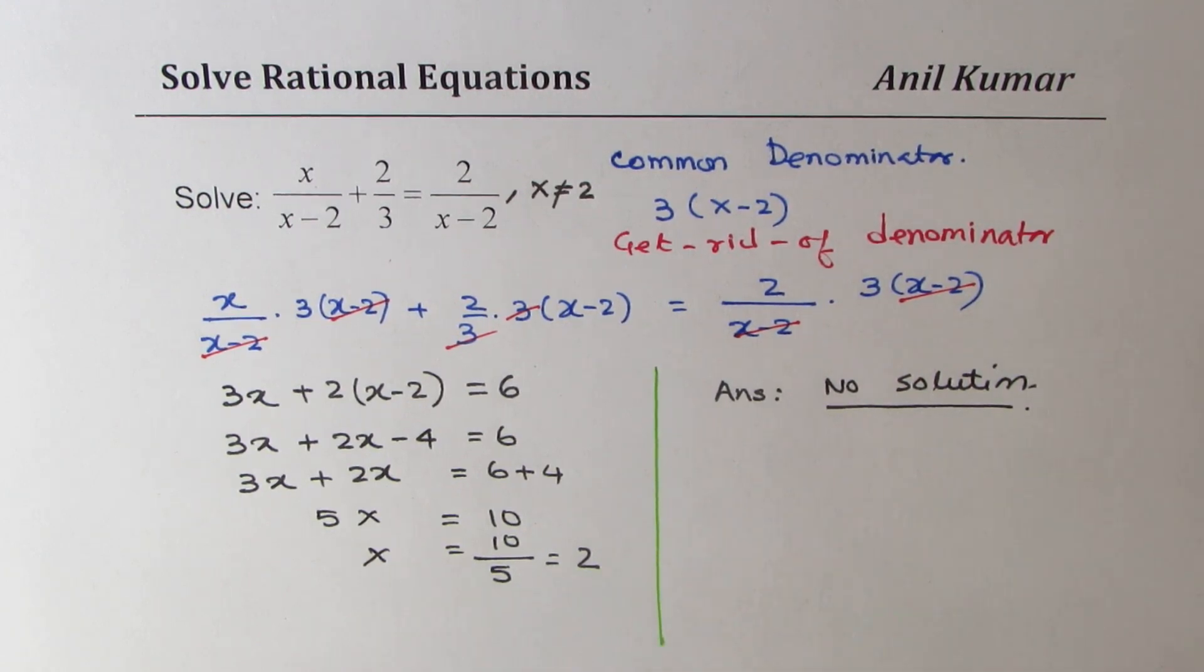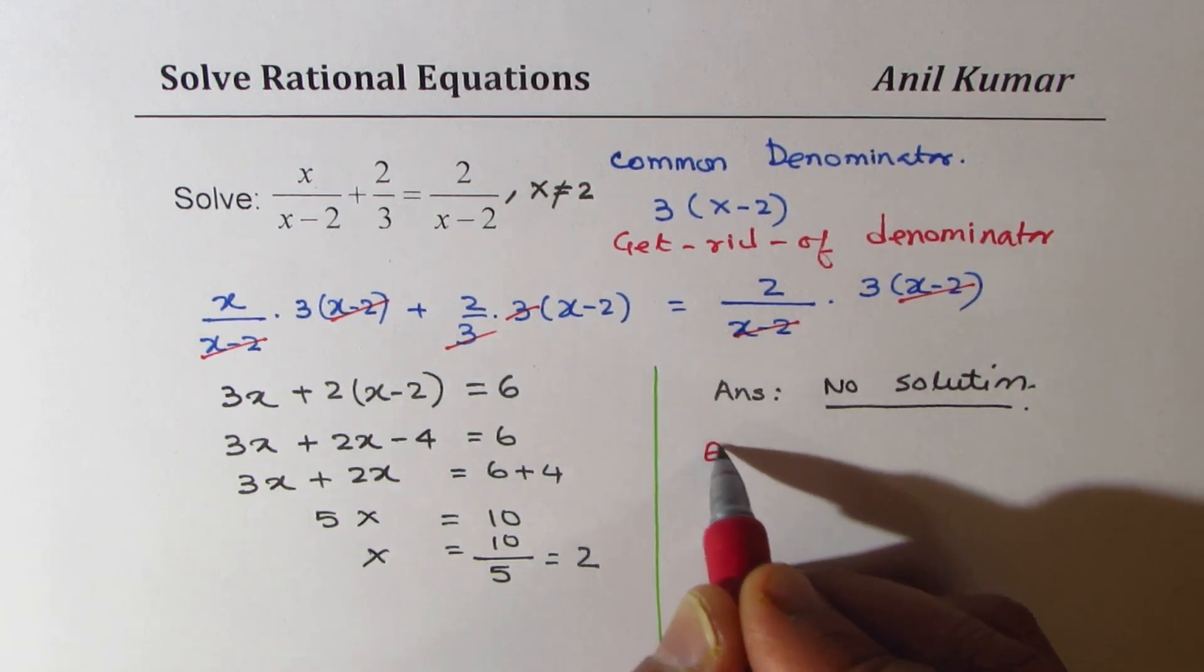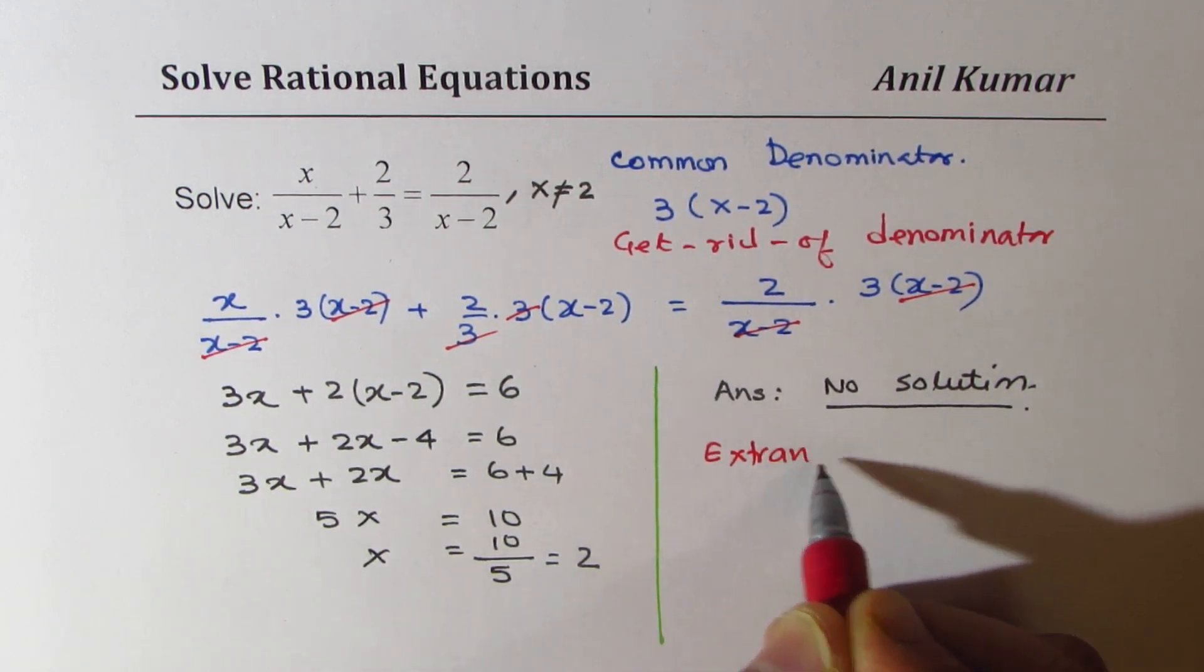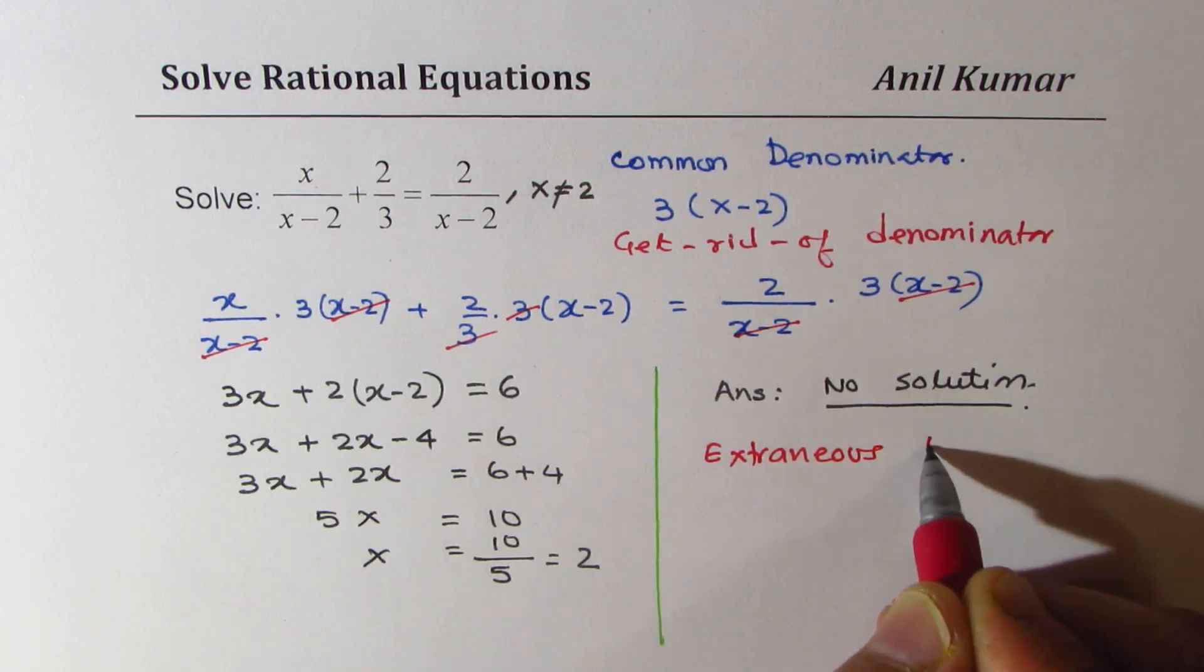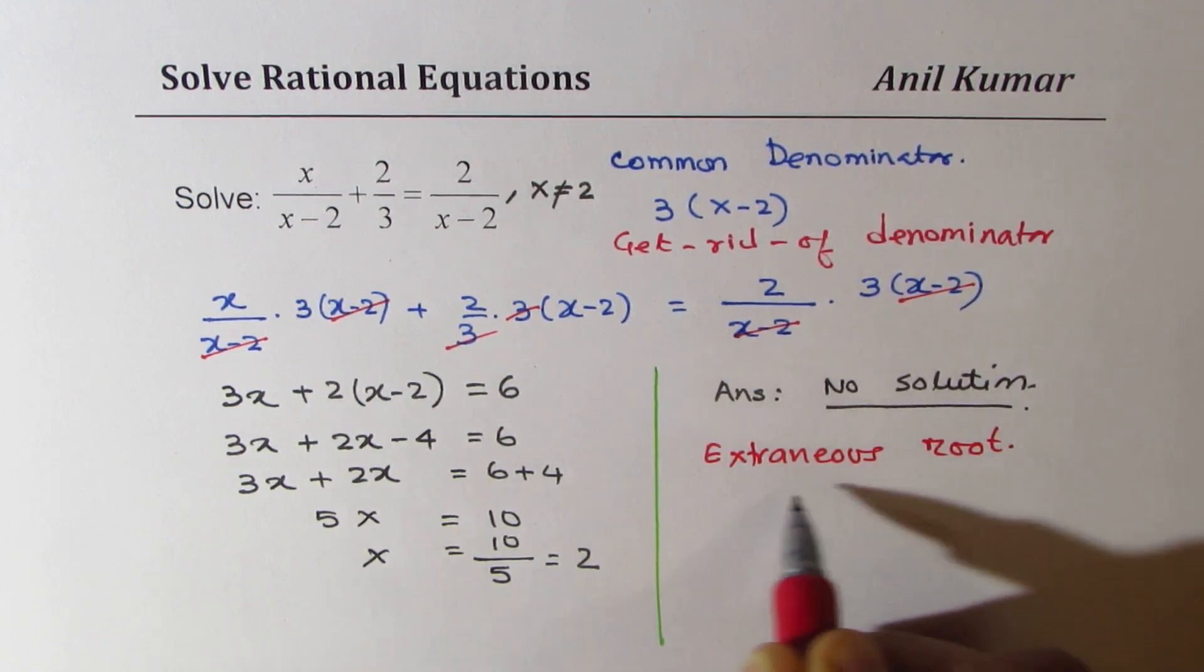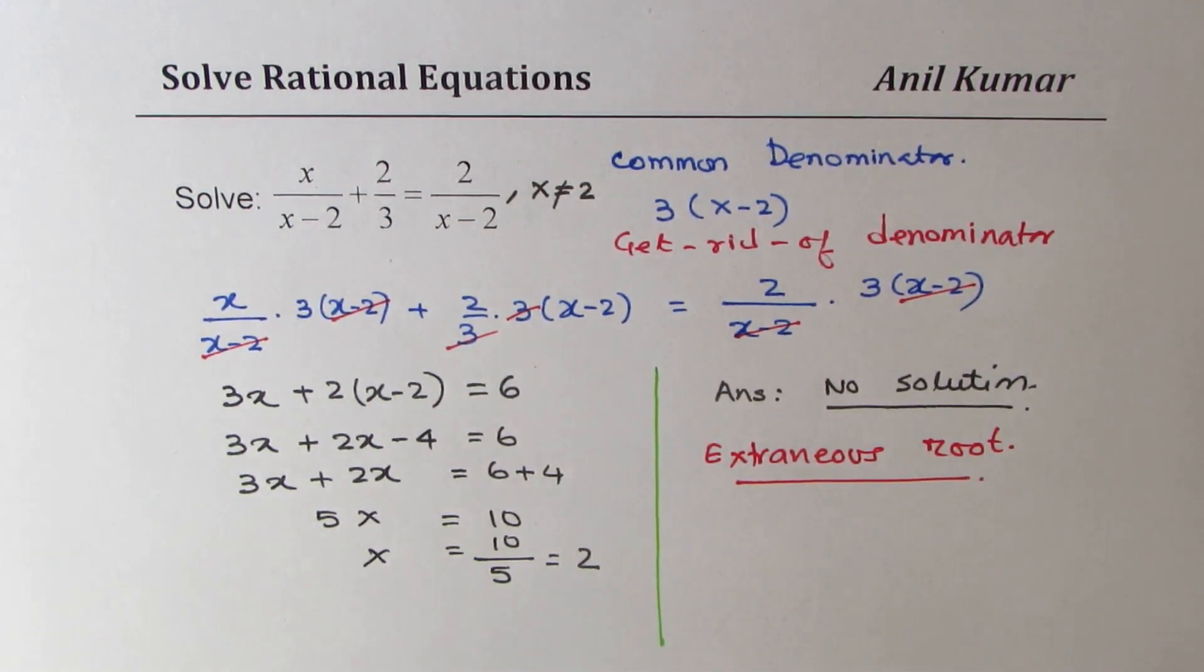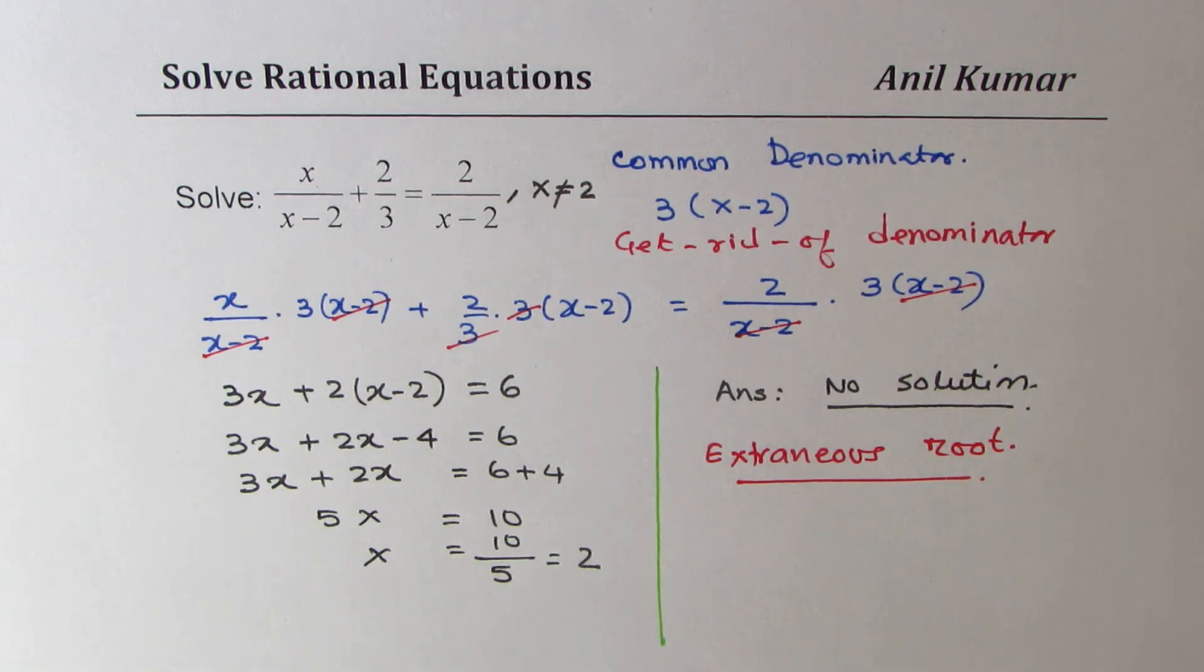It is very important to understand that whenever you solve rational equations, you could get extraneous roots. So this is extraneous root. I hope this step is absolutely clear. Now, let's move on and take up the next question.